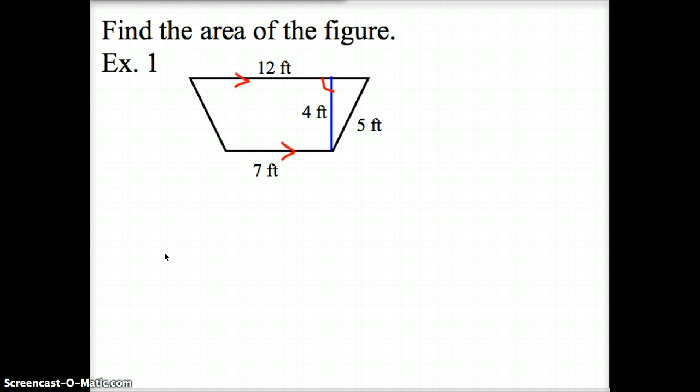Let's look at example 1. We're finding the area of the figure. Your bases are going to be denoted with these two little arrows like this. That means these two sides are parallel to each other. Your height always meets at a right angle with your bases.